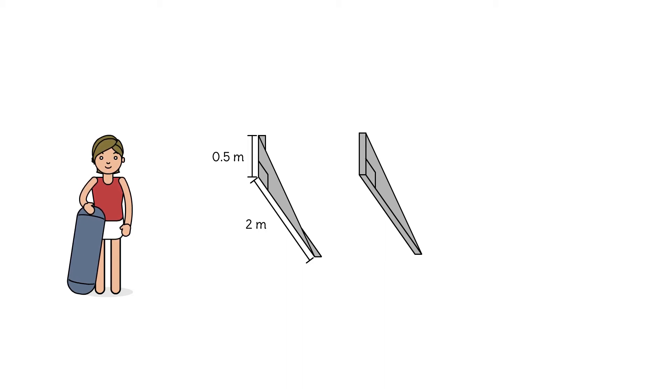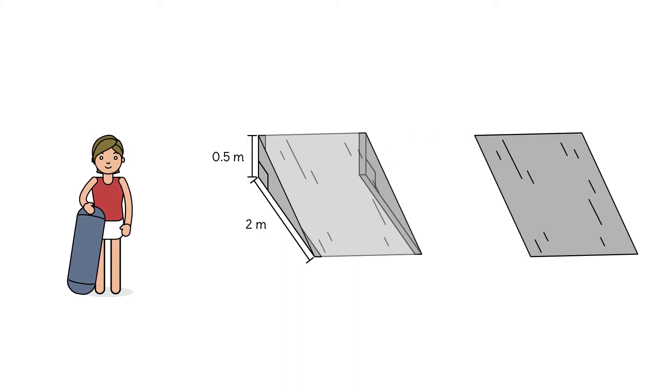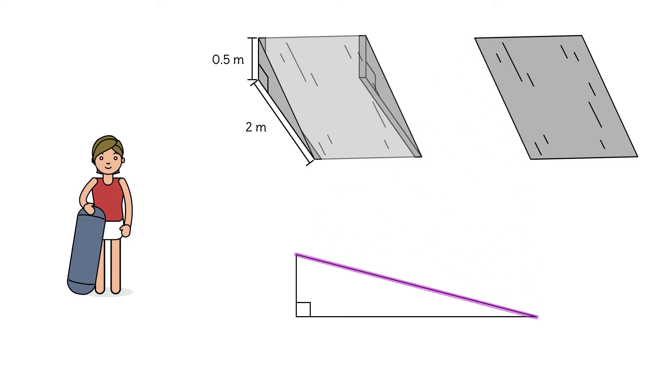Now she needs to cut a piece of plywood for the face of the ramp. That's the hypotenuse of the right triangle. What's the correct length?